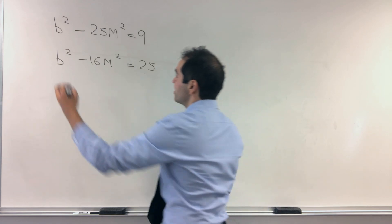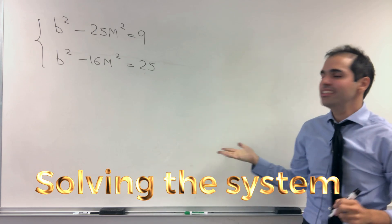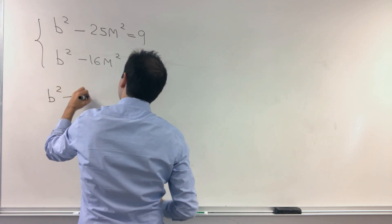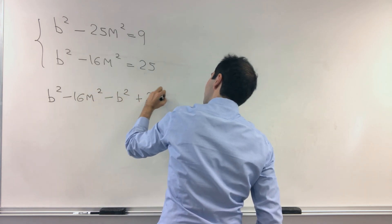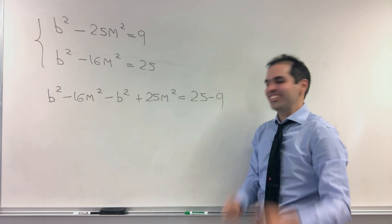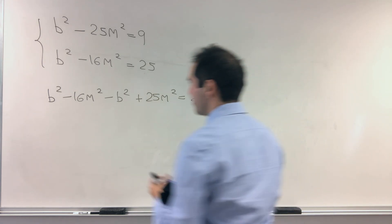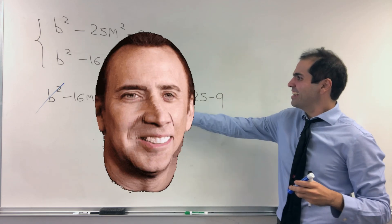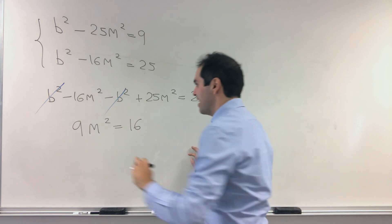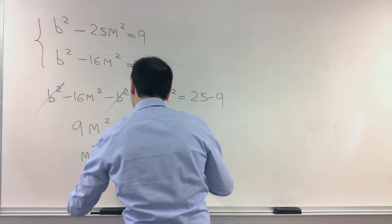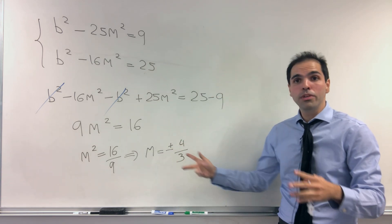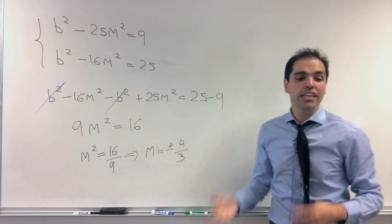Because remember, we had the system: b² − 25m² = 9 and b² − 16m² = 25. Just subtract the first from the second, and what we get is 9m² = 16, so m² = 16/9, meaning m = ±4/3. There'll be two solutions of m, and then two solutions of b, which will give us four different tangent lines.